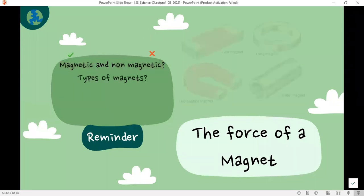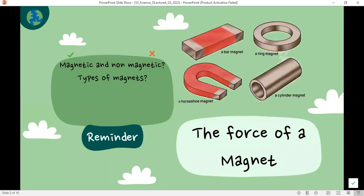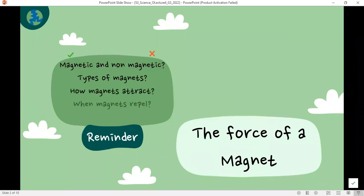Magnets exist in different shapes and forms. For example, we have bar magnets, ring magnets, horseshoe magnets, slender magnets, rod magnets, disc magnets, and other shapes.